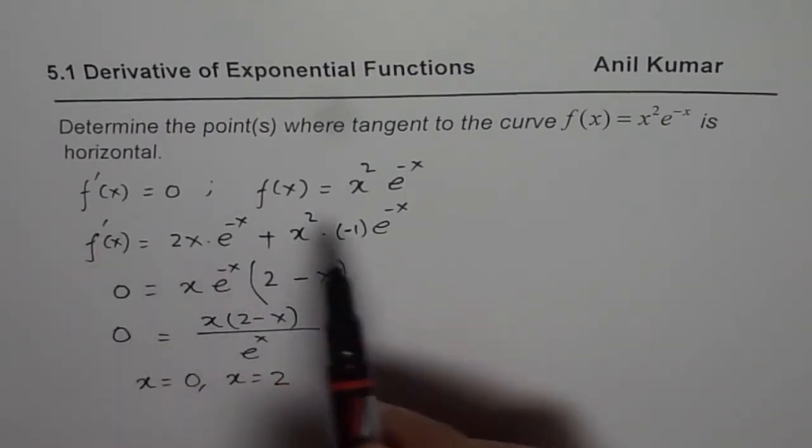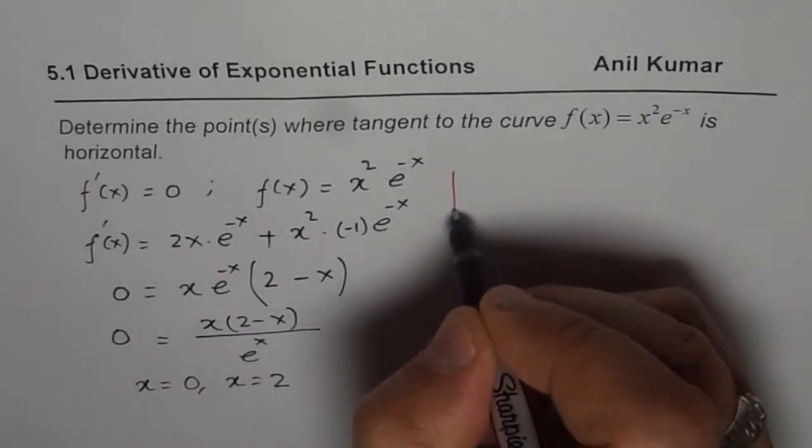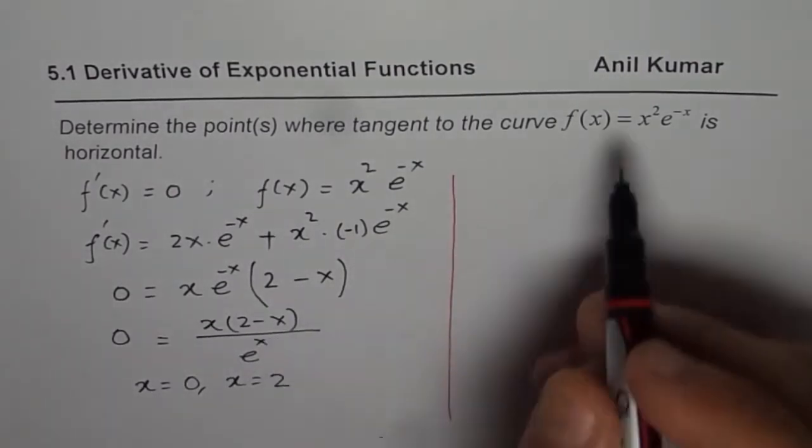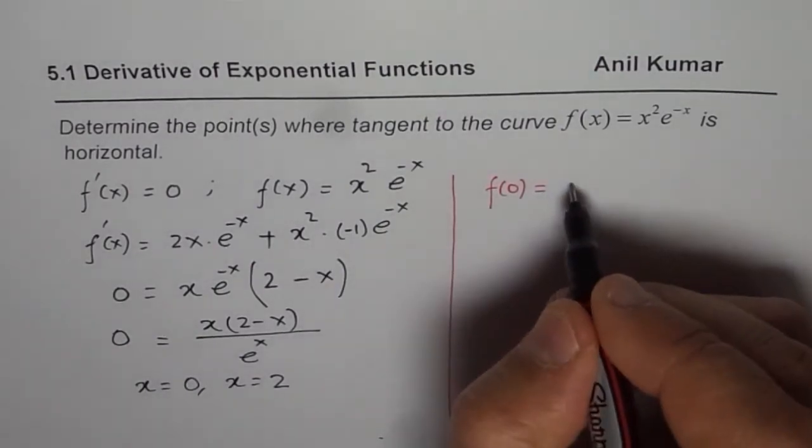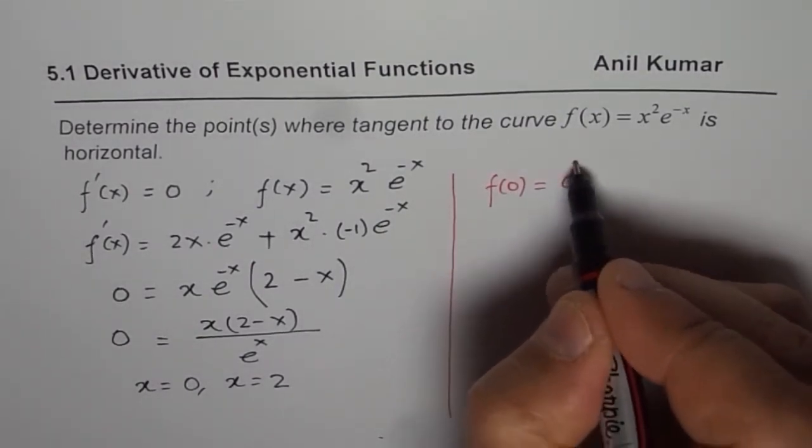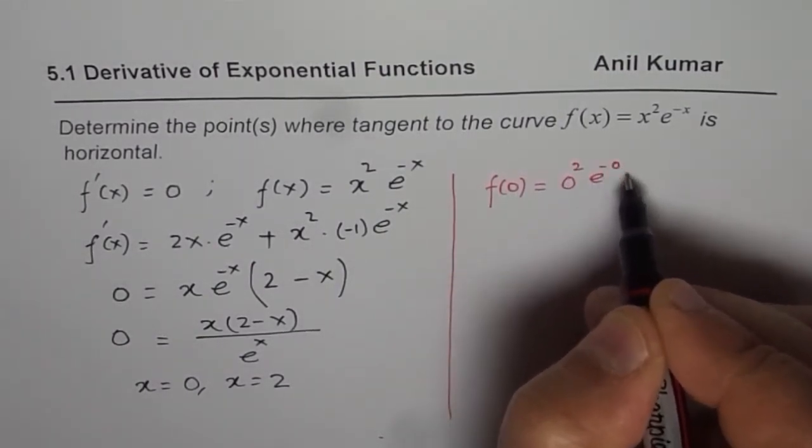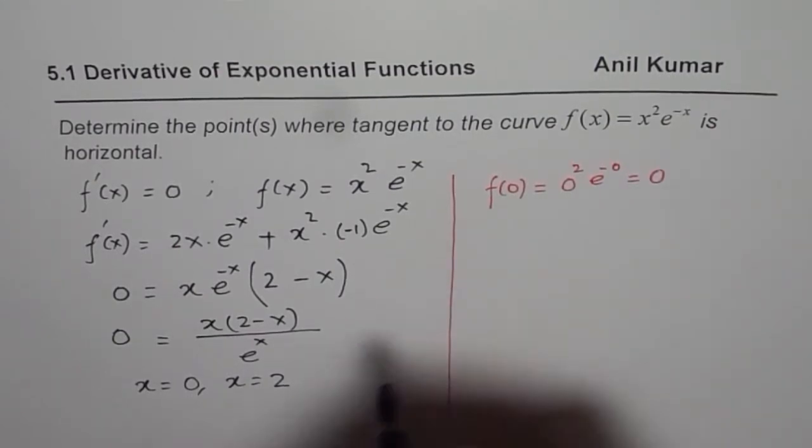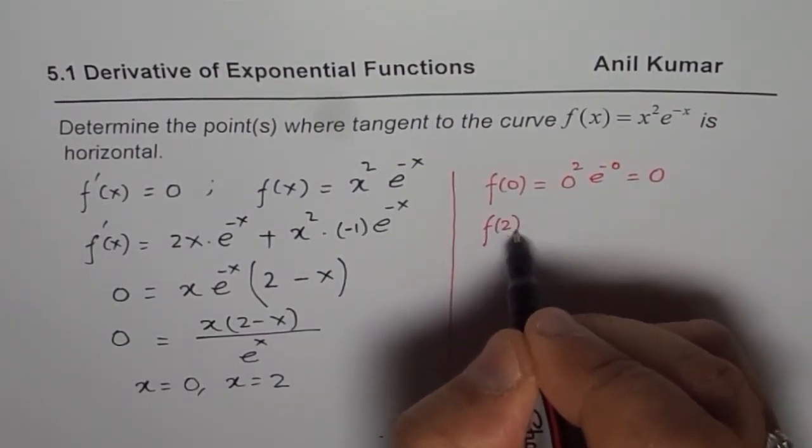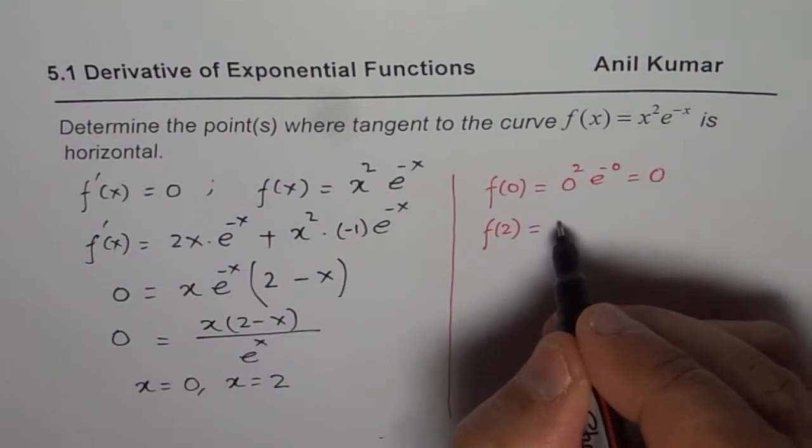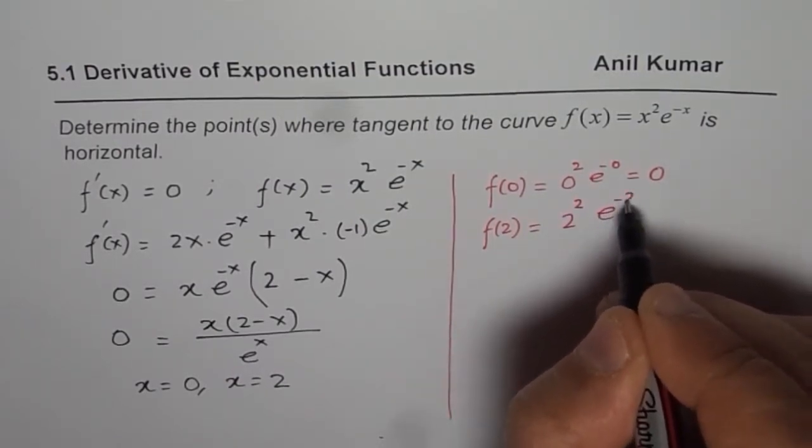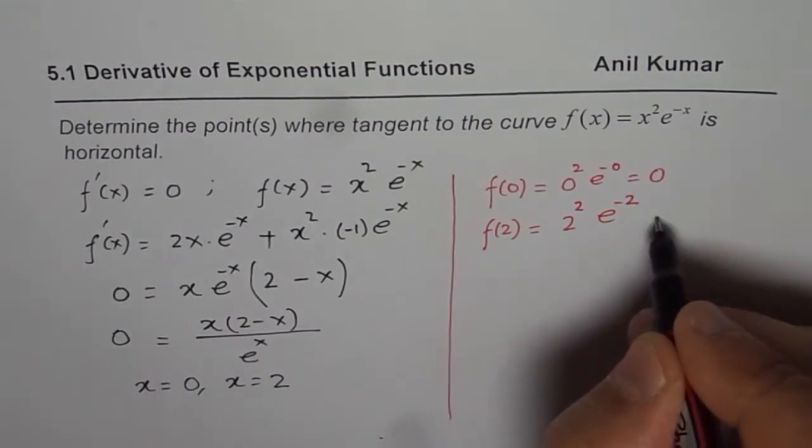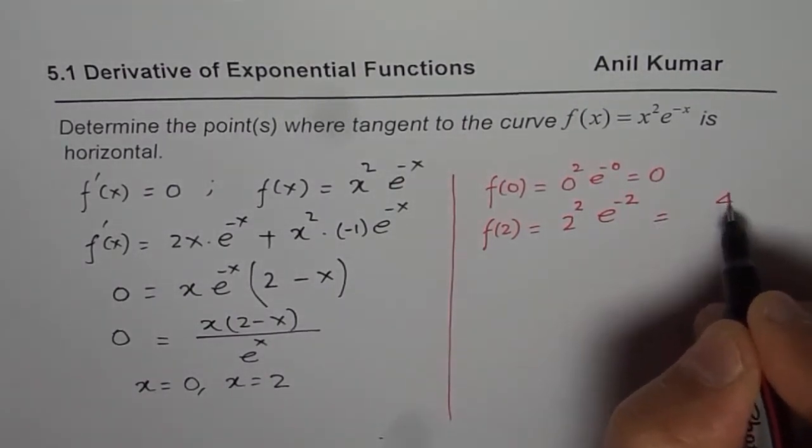Now, to find the points, what should we do? We need to substitute these and find the value. So what is the value at 0? f of 0 is equal to 0 because 0 times anything will be 0. And then we have to find f of 2 equals 2 squared times e to the power of minus 2. We can write this as 4 over e squared.